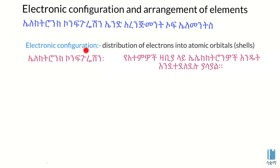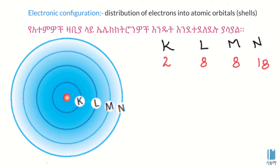Electronic configuration means the distribution of electrons into atomic orbitals or shells. The atomic orbitals or shells are labeled K, L, M, and N.